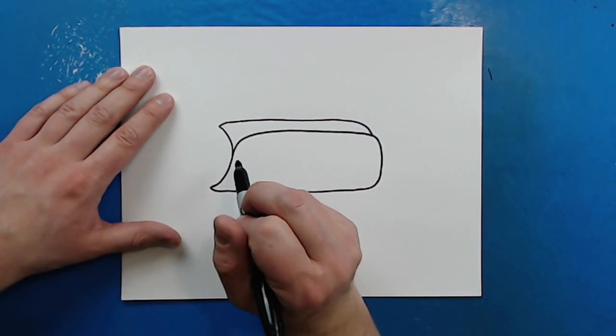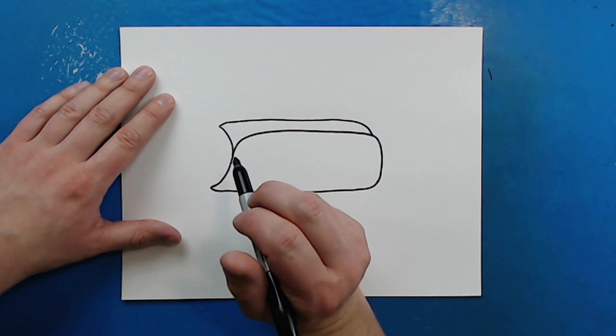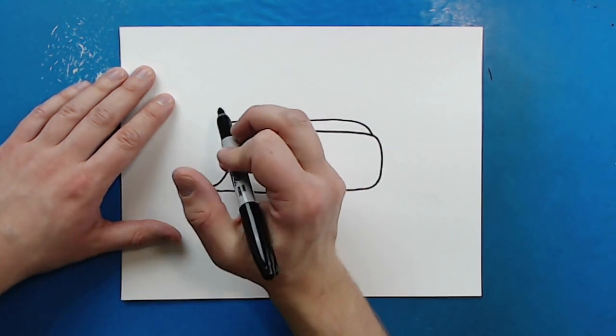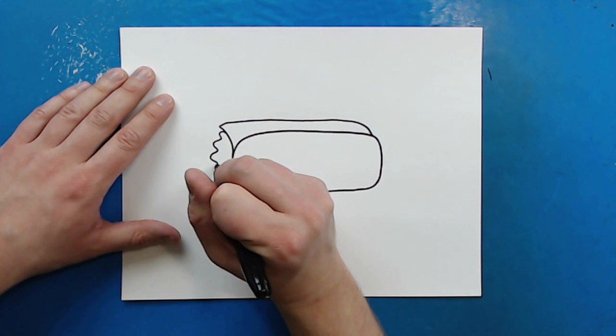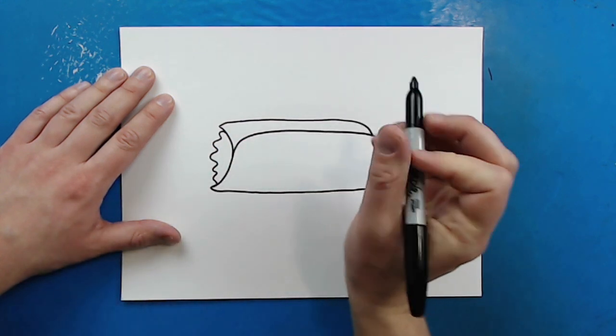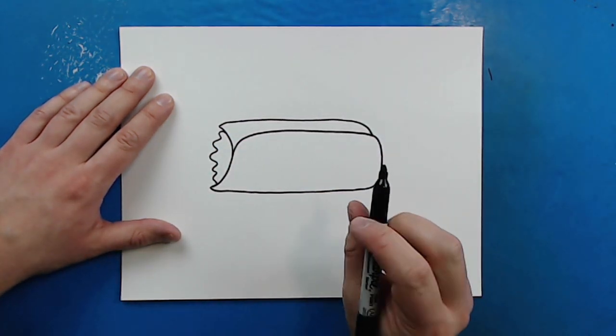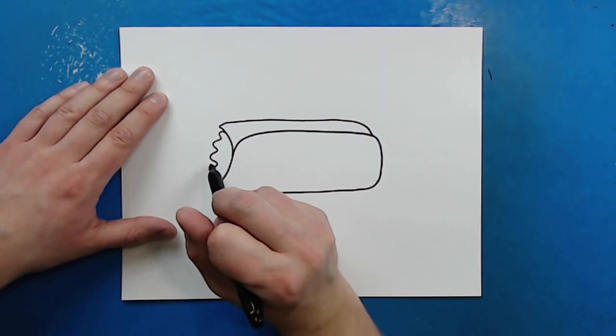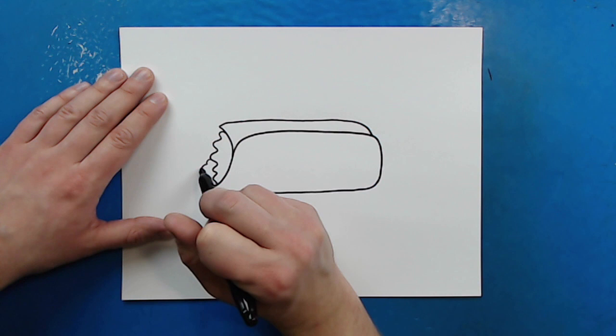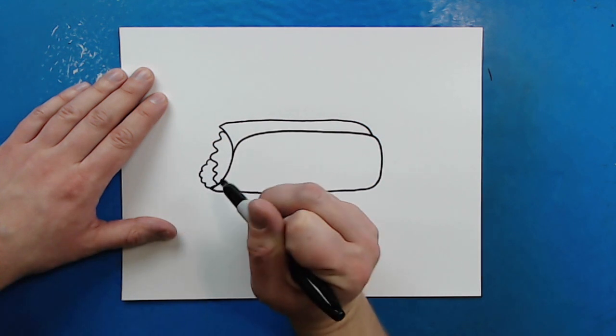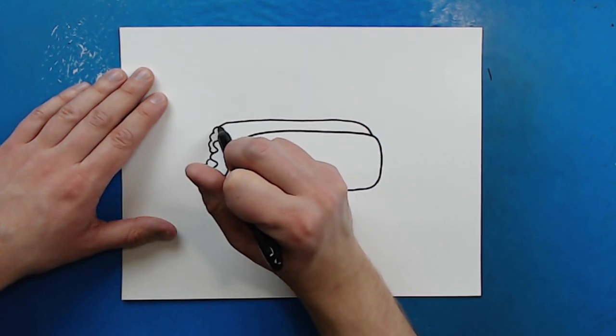Now inside of our burrito we want to put some different toppings. So the first thing I'm going to do is I'm just going to make some wavy lines like this and this can stand for the lettuce. Now underneath here, I'm going to just draw, starting right here, some bumpy lines to represent the meat and I'll put some up here as well.